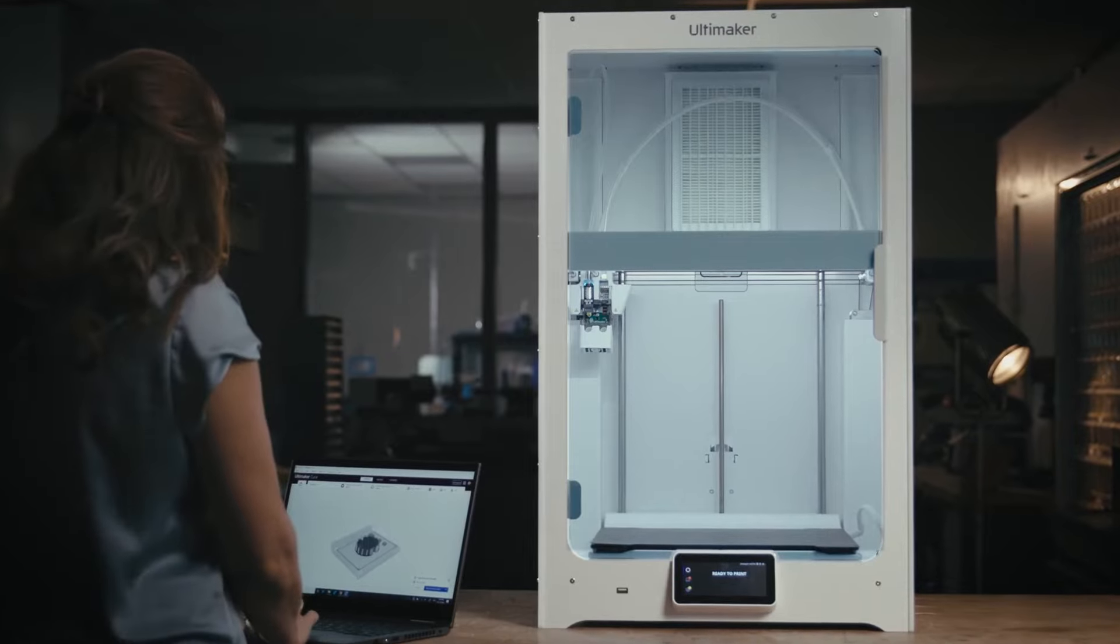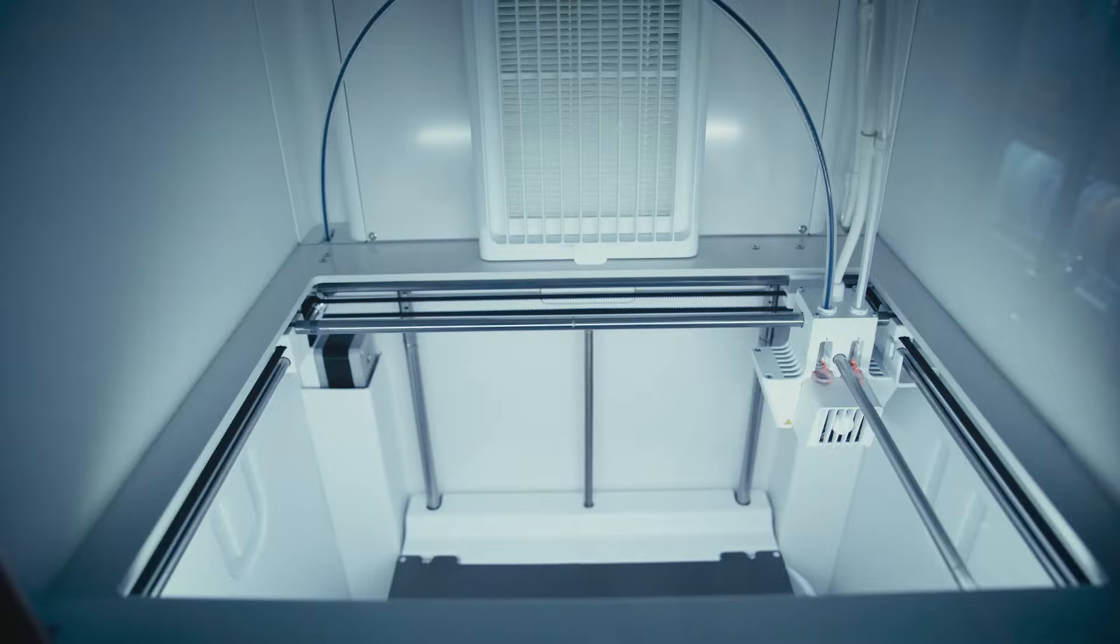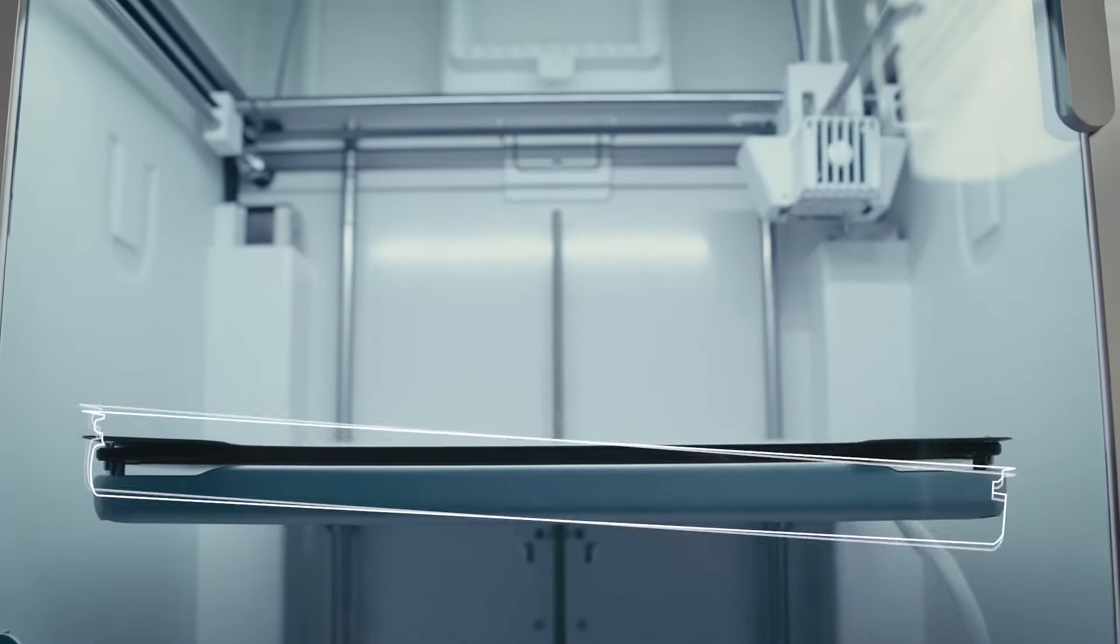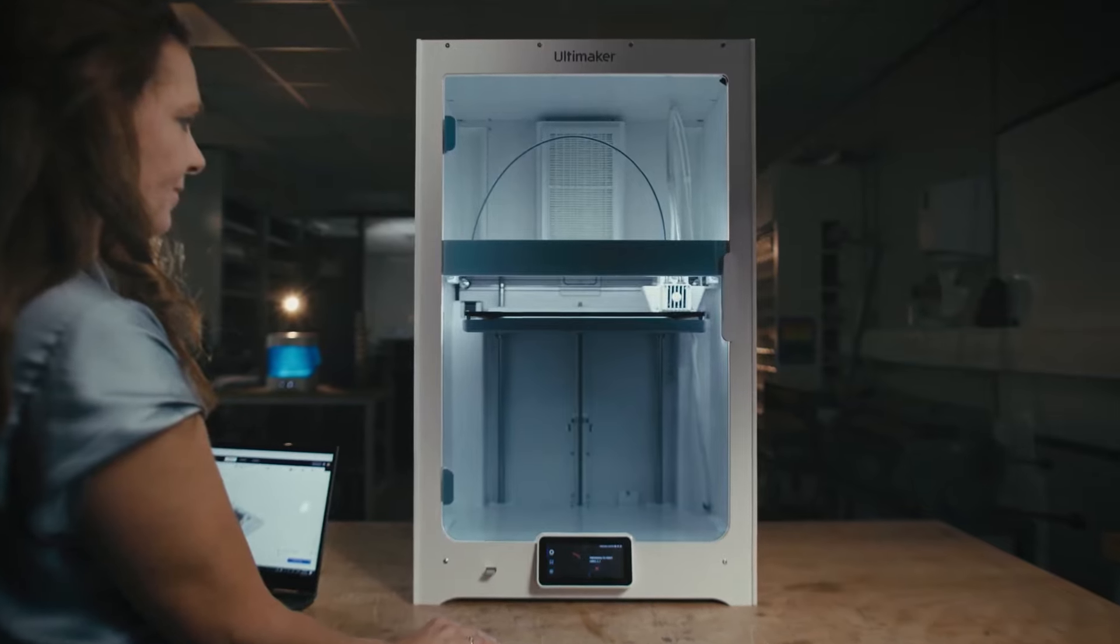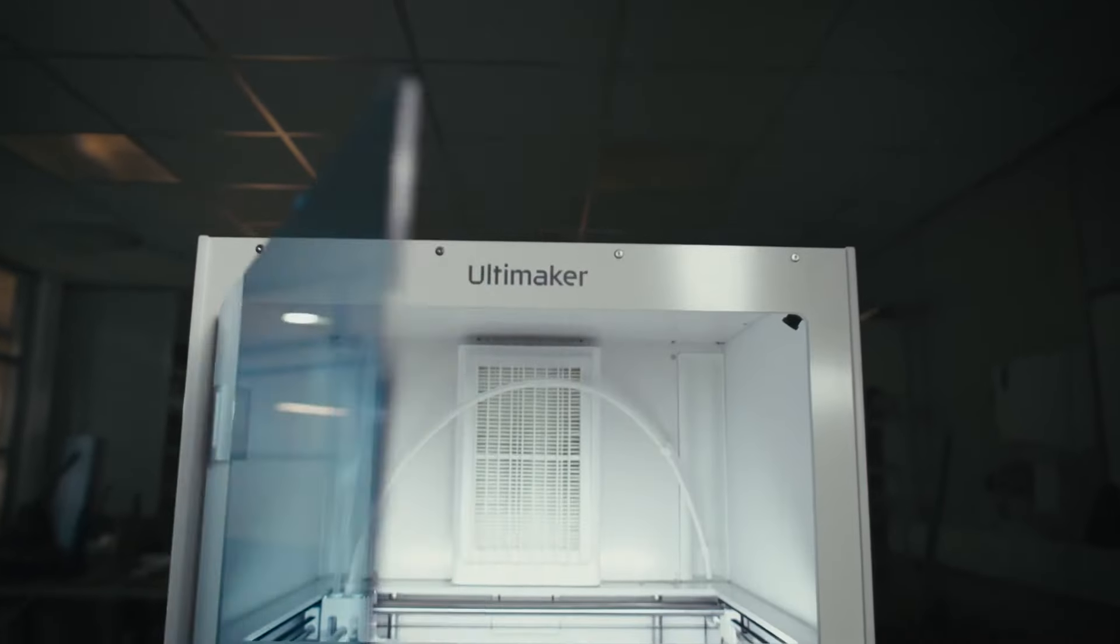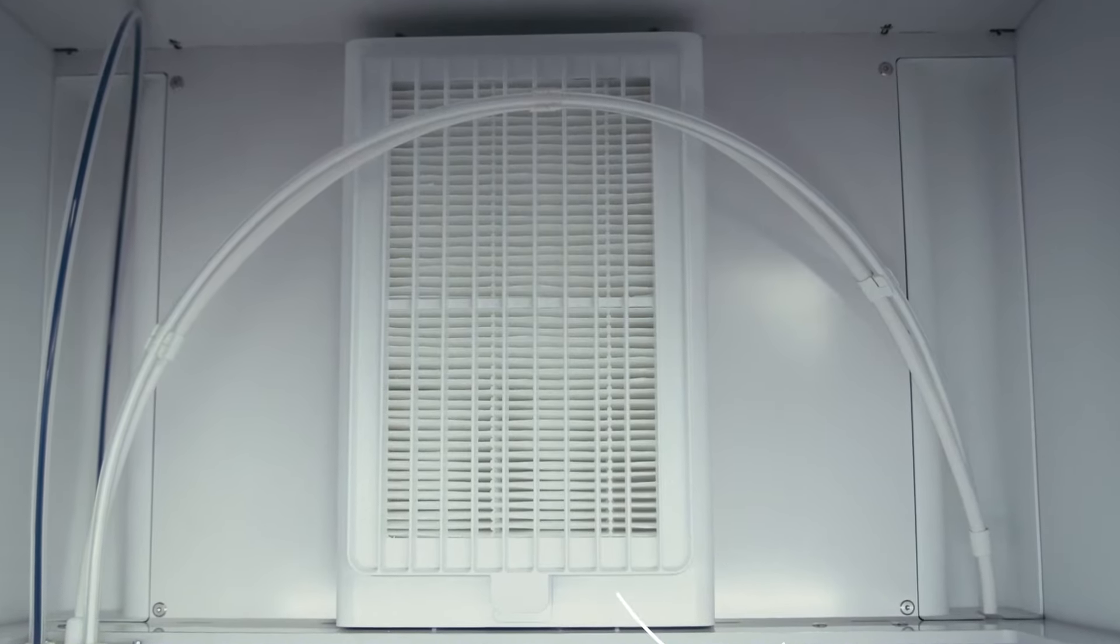The S7 builds on Ultimaker's already remarkable 3D printing reliability with new features, such as an inductive sensor that allows for improved automatic bed leveling, and an integrated air manager for excellent environmental control right out of the box.